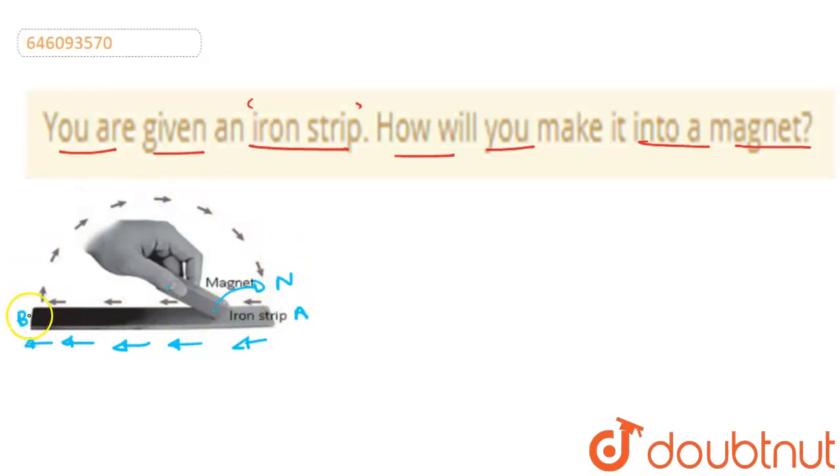So, we will lift it from this bar magnet and then bring it back from B to A. And then, we will slide it from A to B again. If we repeat this step 30-40 times, this iron strip will be magnetized with two different poles, north and south. Just like a bar magnet.